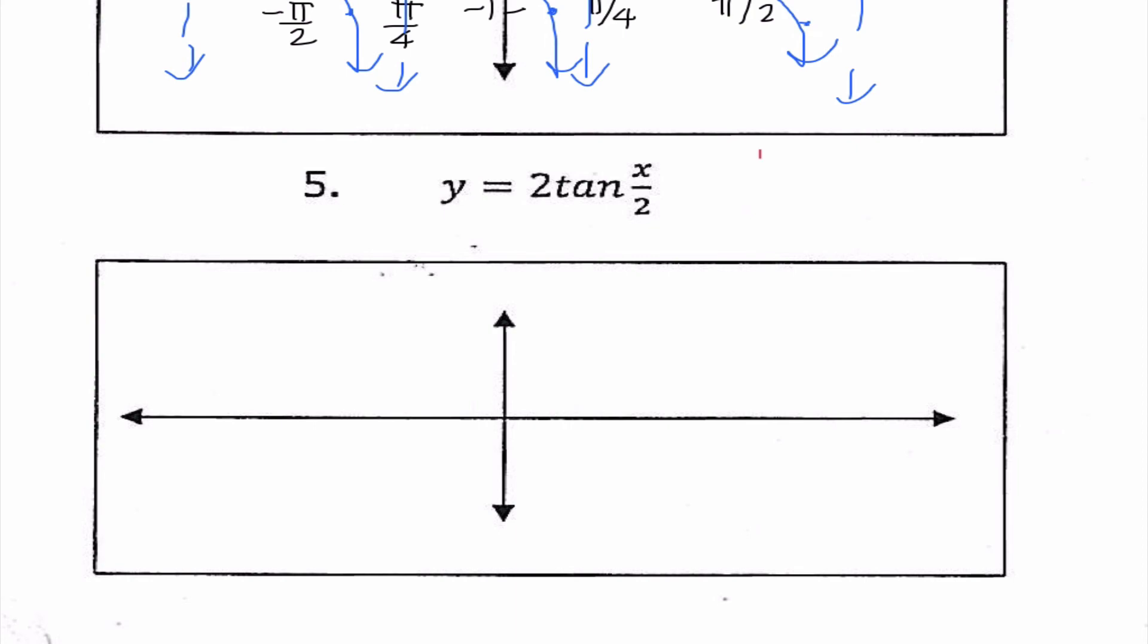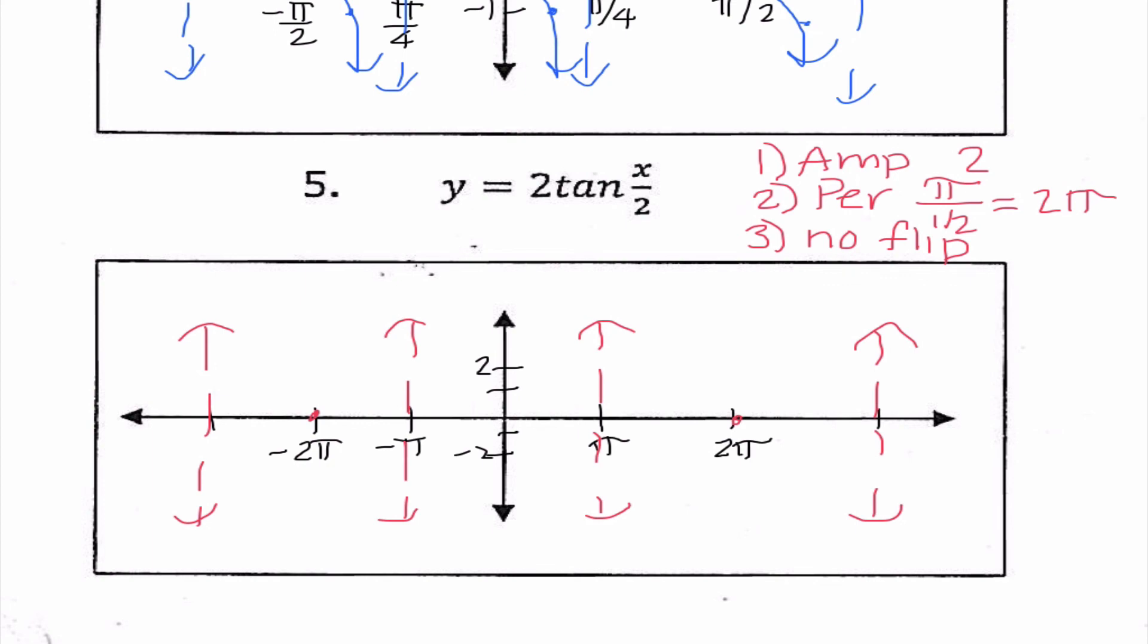Now we know that it continues forever to the right and to the left, but we are good with just graphing these. Number 5. Our amplitude here is 2. Our period, and sometimes this can kind of throw us off, I know it's π divided by b. Our b value here is 1 half. So I know x over 2 is the same thing as 1 half x. So π divided by 1 half is 2π, and there is no flip. So I labeled and put the asymptotes. I know to the right, halfway I'm going to go up 2. To the left, I'm going to go down 2. And I'm going to repeat that in each of the three periods that we are graphing here. So just like sine and cosine, this is super repetitive. We're doing the same thing almost every single time.